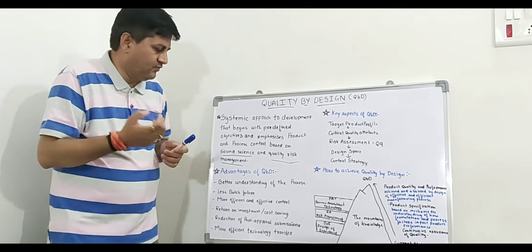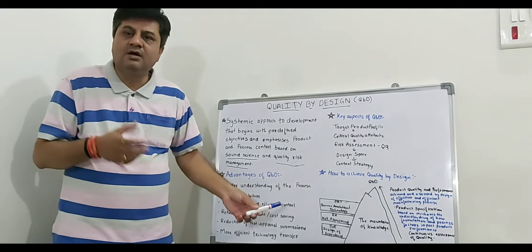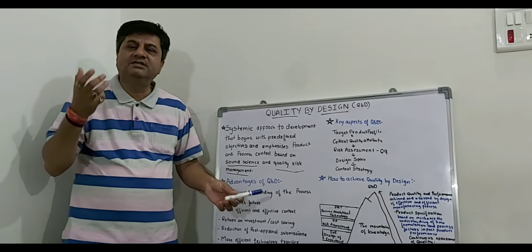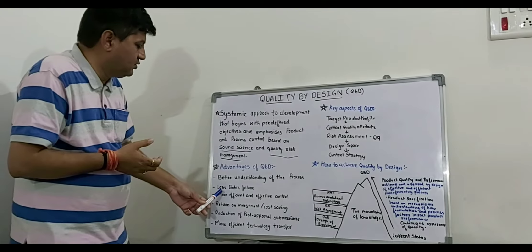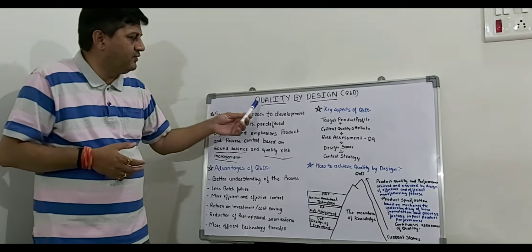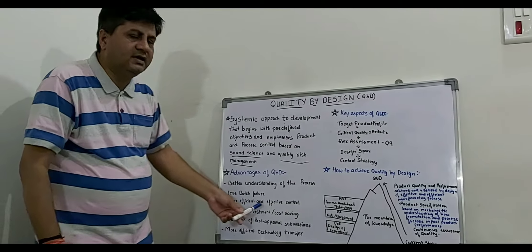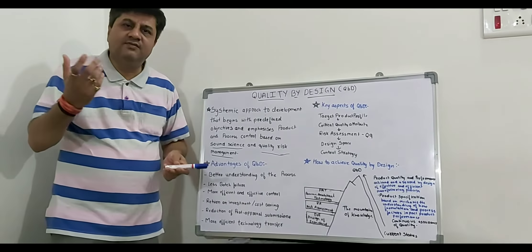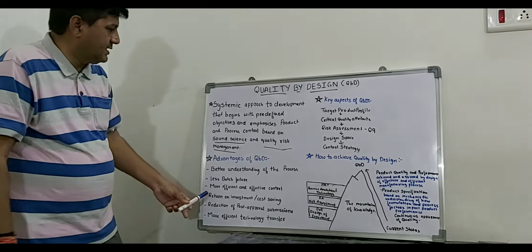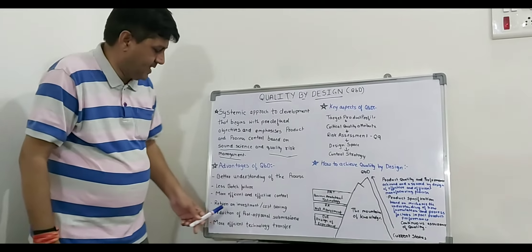The second advantage is less batch failure — fewer batches will fail if we adopt Quality by Design. Third is more efficient and effective control of changes — whatever changes take place during the process are more effectively controlled. There is also return on investment and cost saving. Another advantage is reduction of post-approval submissions, and finally more efficient technology transfer.